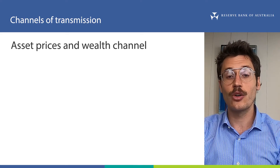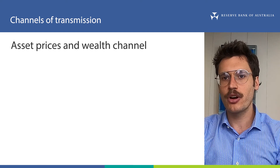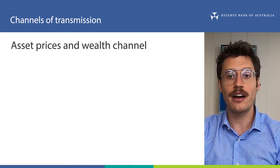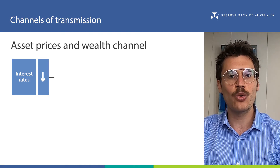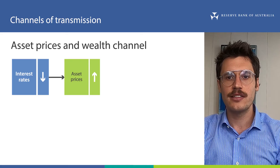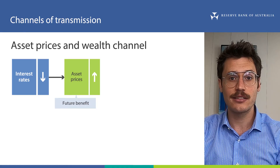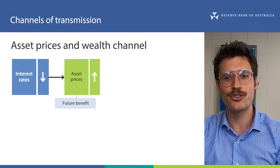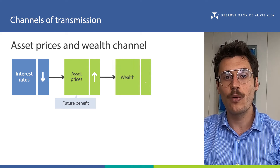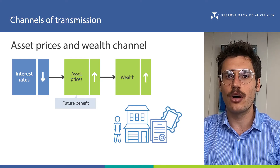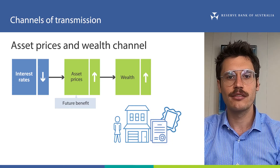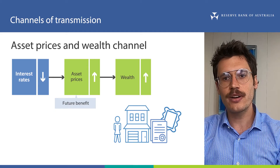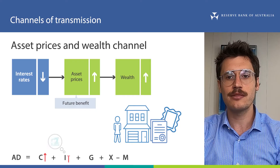The third channel is called the asset prices and wealth channel. Asset prices and the wealth held by households and businesses affects how easily they can borrow money and also how confident they are to spend it. In general, lower interest rates tend to support higher prices for some assets — one reason being that lower interest rates increase the future benefit provided by these assets relative to before. I discuss this in a short related video called 'Asset Prices and Interest Rates', with a link in the description. Higher asset prices flow through to higher wealth, which measures the value of everything someone owns (their assets) minus what they owe (their liabilities). This channel can increase aggregate demand through higher consumption, business investment and investment in new housing.